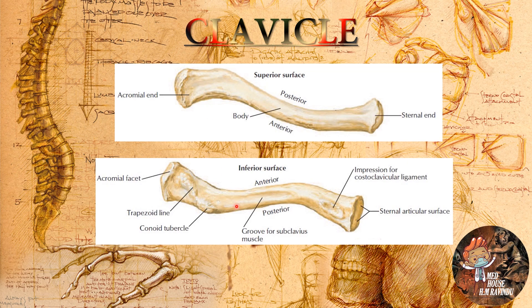On the inferior surface we can see some distinct structures: the trapezoid line, the conoid tubercle, the groove for the subclavius muscle, and the impression for the costoclavicular ligament.